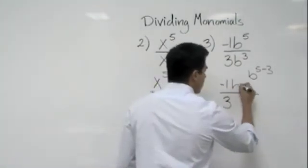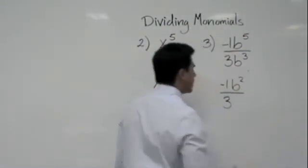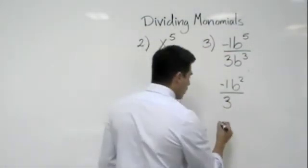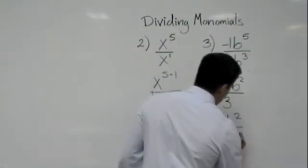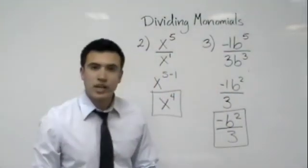b to the second stays on your numerator and there's nothing left on your denominator. So your answer here is just negative one b to the second over three or negative b to the second over three. Don't worry, we're going to try some more.